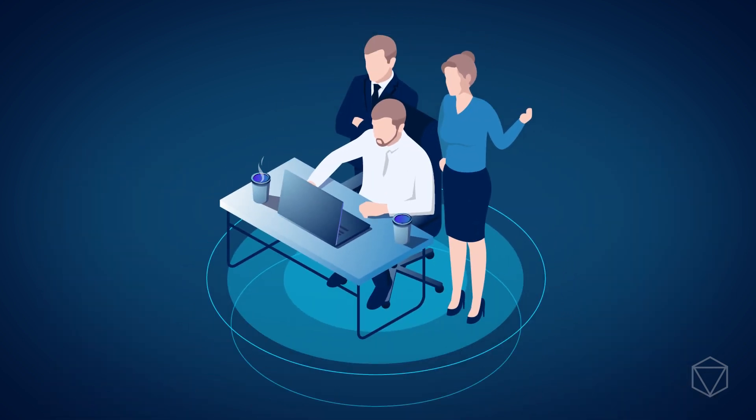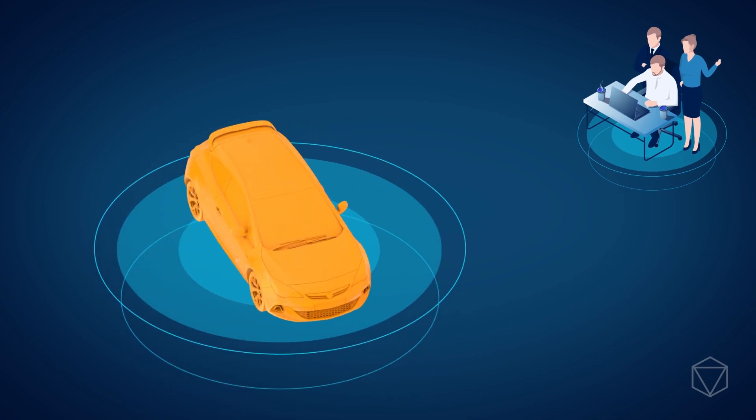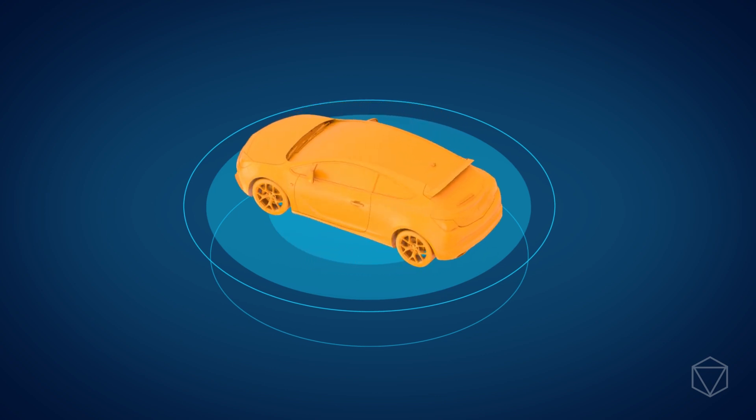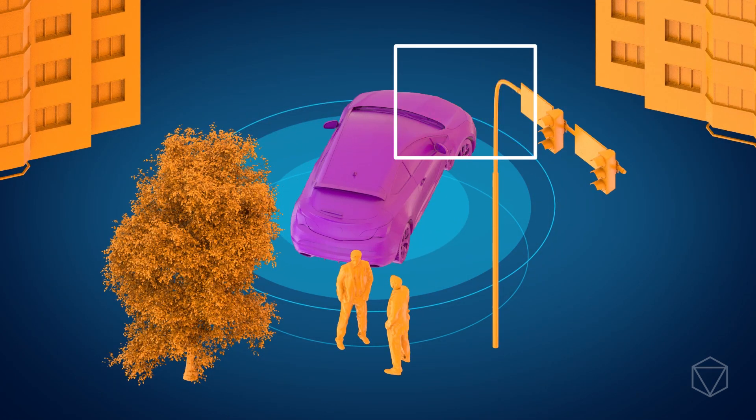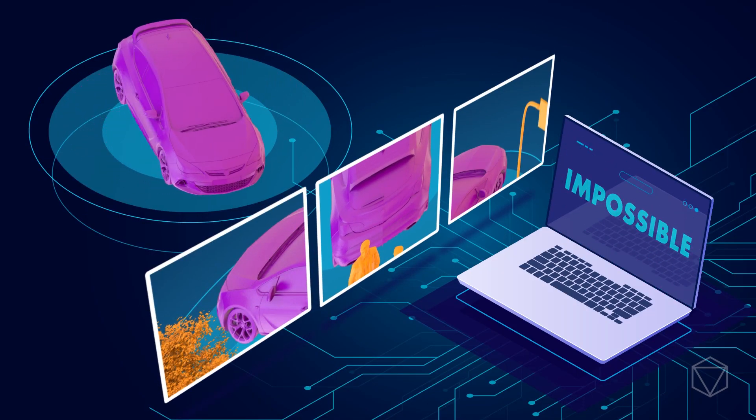Recently we received a challenging request from a major car company to develop a computer vision application that can identify the car model in a given image. Considering that different car models can appear quite similar and any car can look very different depending on their surroundings and the angle at which they are photographed, such a task was, until quite recently, simply impossible.